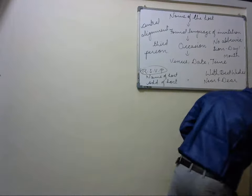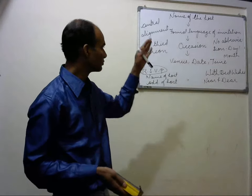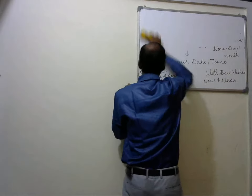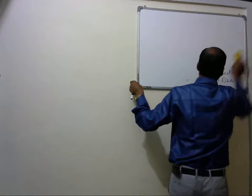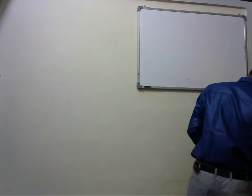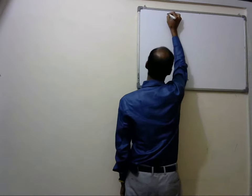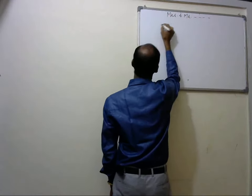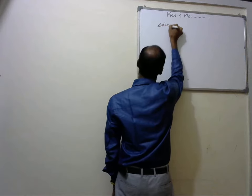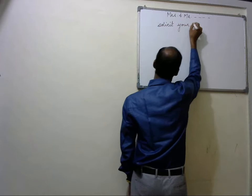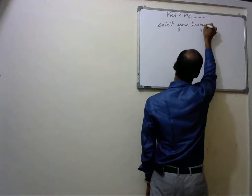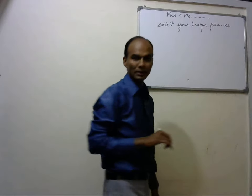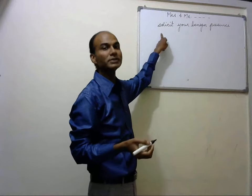Now let's take an example of a complete and perfect invitation. First, we'll write Mrs. and Mr. So-and-So. Then we write the formal language: 'solicit your benign presence.' You can use this language, or you can use any other language — for example, instead of 'solicit your benign presence,' you can write 'request the pleasure of your gracious company' or 'request the pleasure of your gracious presence.' Or you may draft your own line which can be properly placed here.